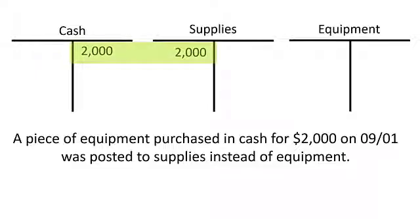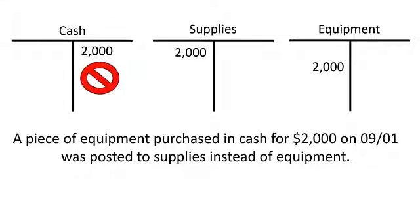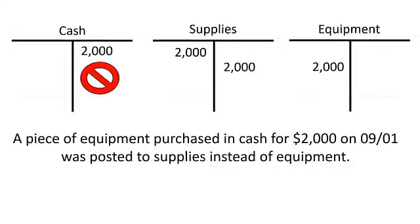This is an example of our original transaction: a credit to cash and a debit to supplies. For the correcting entry, we know we need to debit equipment because that's what should have happened in the first place. But where does the credit go? We don't want to credit cash because we've already credited it once before — if we credited it again, we'd be taking cash out two times, and that's not what really happened.